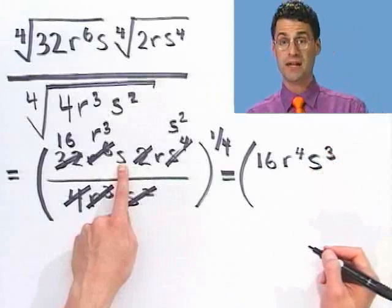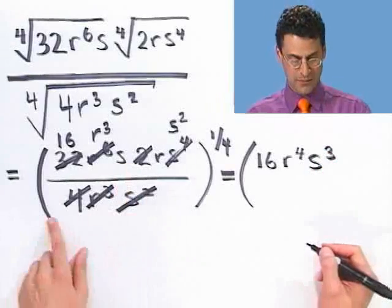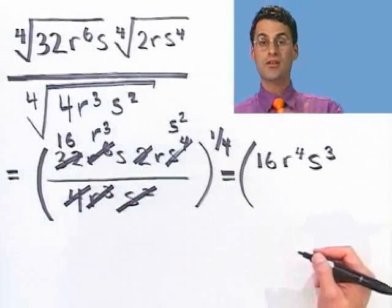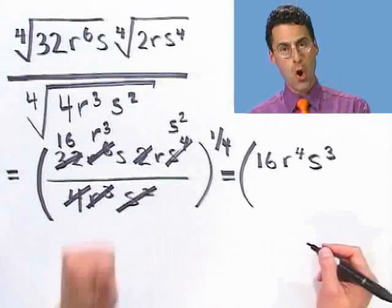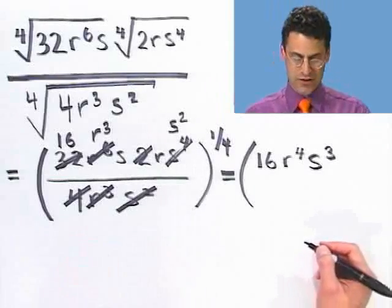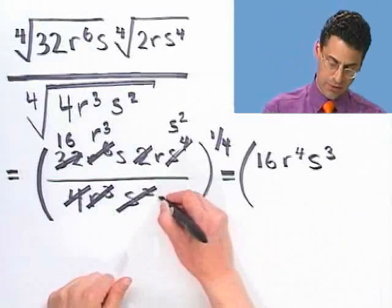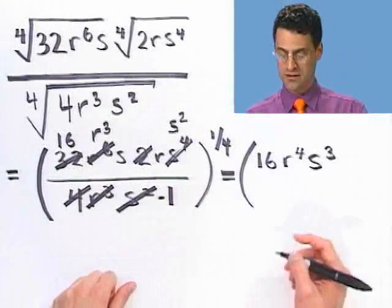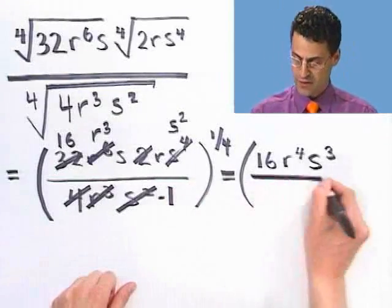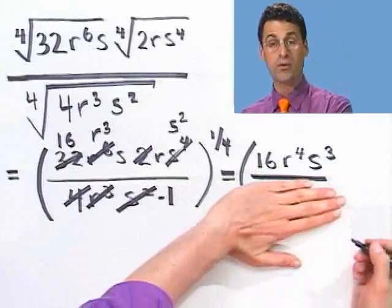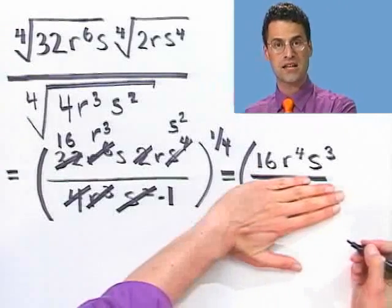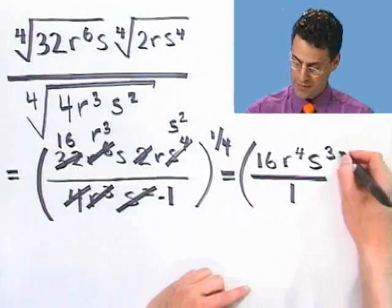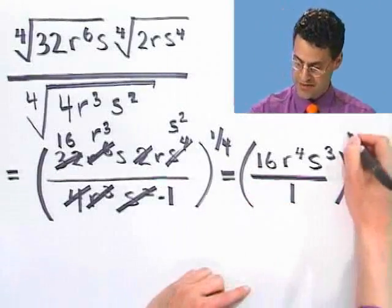What's on the bottom? Nothing — but remember there's always an invisible one there. So the whole fraction is 16r⁴s³ over 1, which is just 16r⁴s³.